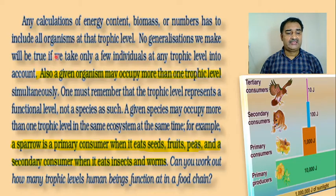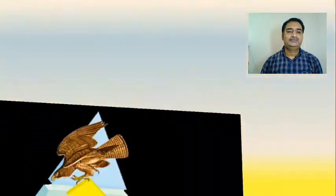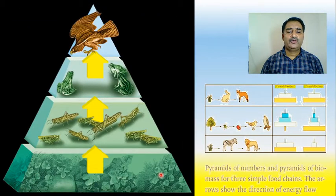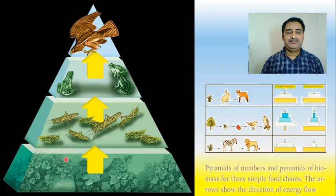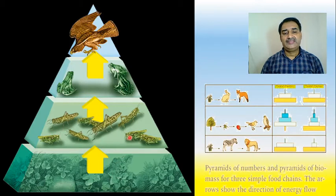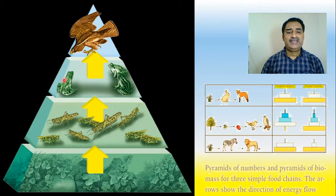No generalization we make will be true if we take only a few individuals at any trophic level into account. This means that in any energy, biomass, or number calculation, all organisms of that trophic level are included. Here, all producers — calculate their biomass, their number, or total net primary productivity (NPP). Then look at the number or energy content — every parameter is compared at the same trophic level.